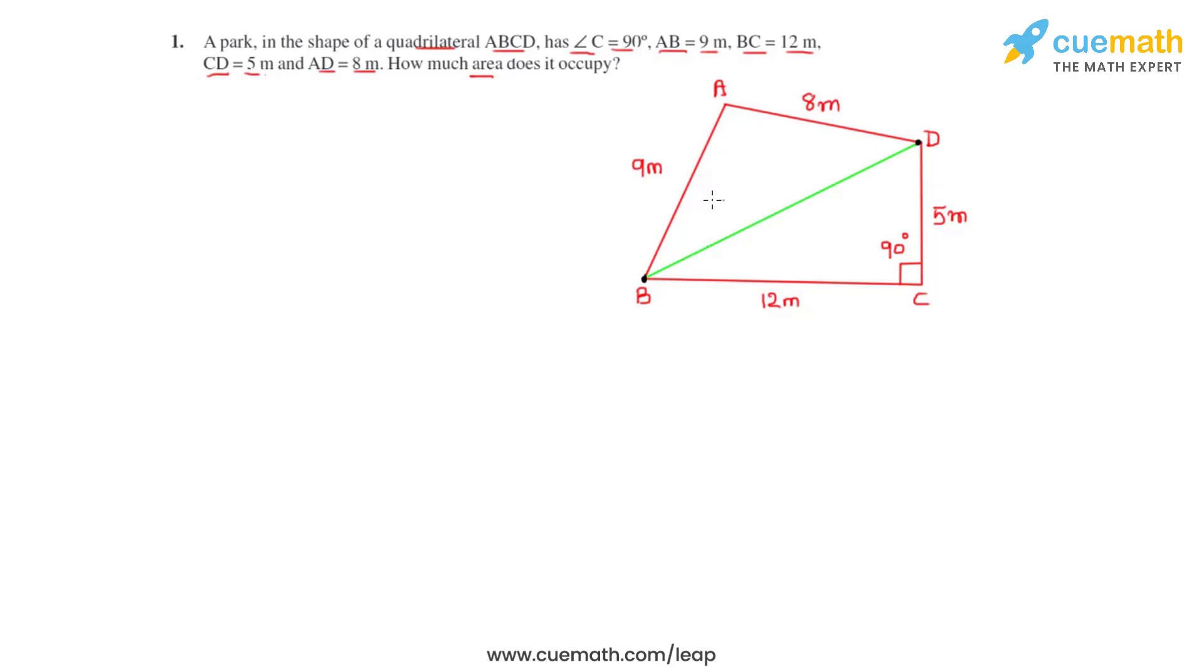As we can see, there are two triangles formed: triangle ABD and triangle BCD. In triangle BCD, we observe that DC is perpendicular to BC. So DC can be taken as the height, while BC is the respective base for this triangle.